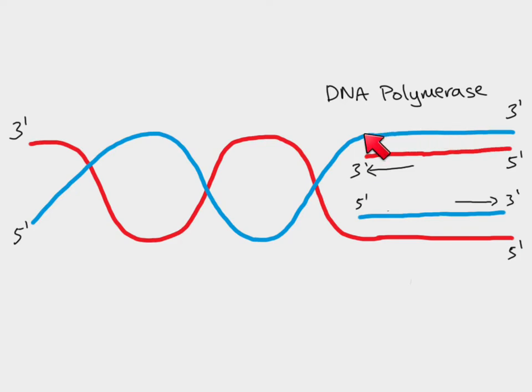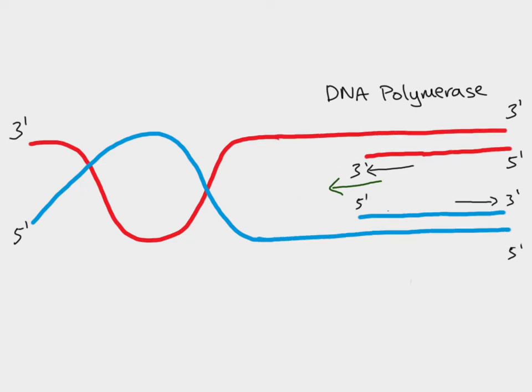Now of course we've only unwound so far a small section. So the next thing that happens is that DNA helicase is going to unwind the next section of DNA. And then the process can continue. So on this strand here, we're able to just move in that direction. Because the DNA polymerase is able to go from 5' to the 3' end of the new strand.